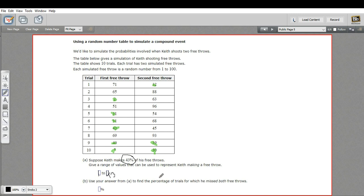The next question is use your answer from A to find the percentage of trials for which he missed both free throws. So we want trials in which both of these are missed.